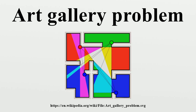If a museum is represented in three dimensions as a polyhedron, then putting a guard at each vertex will not ensure that all of the museum is under observation. Although all of the surface of the polyhedron would be surveyed, for some polyhedra there are points in the interior which might not be under surveillance.